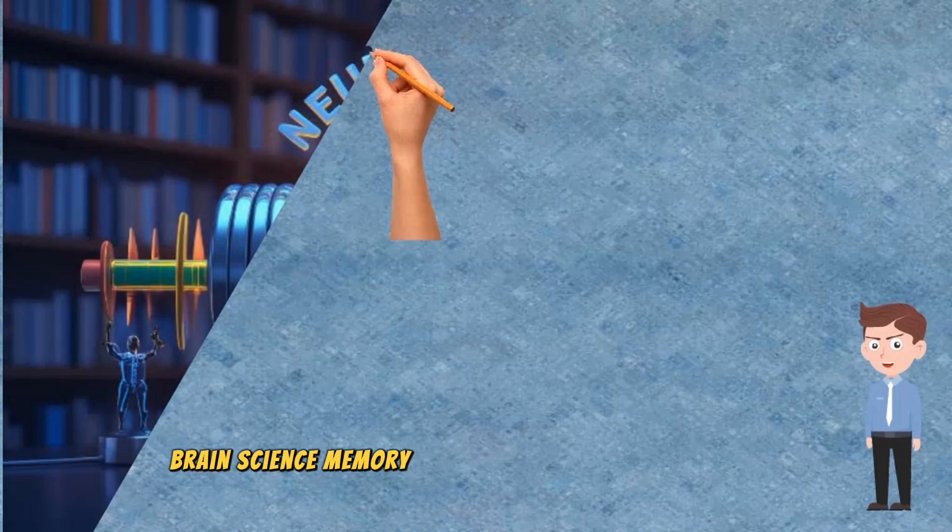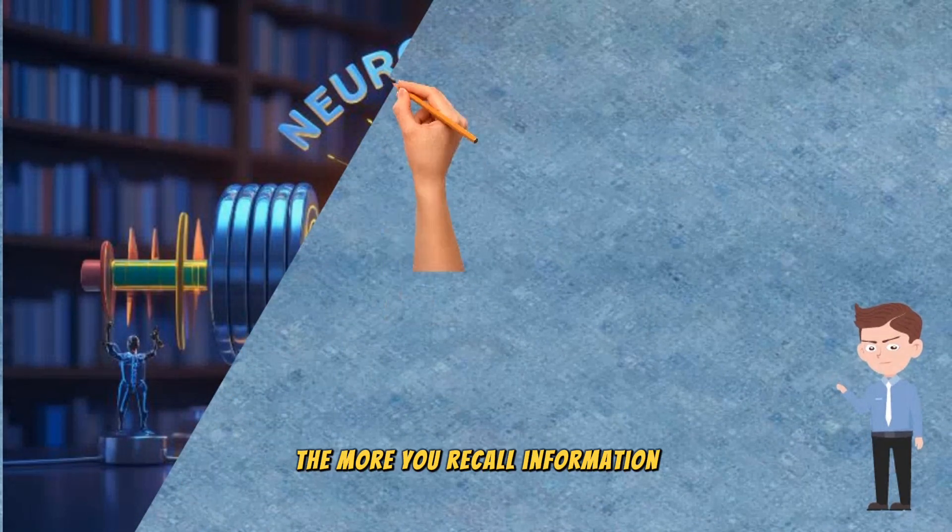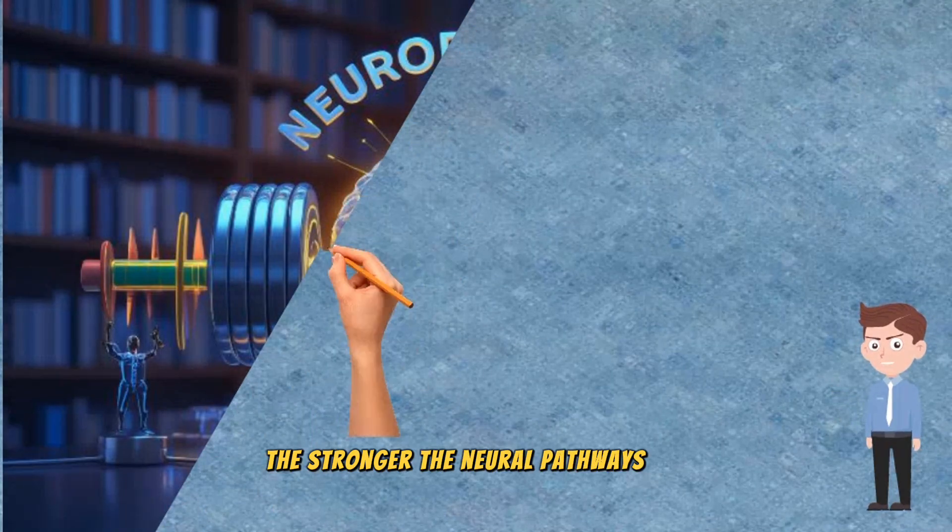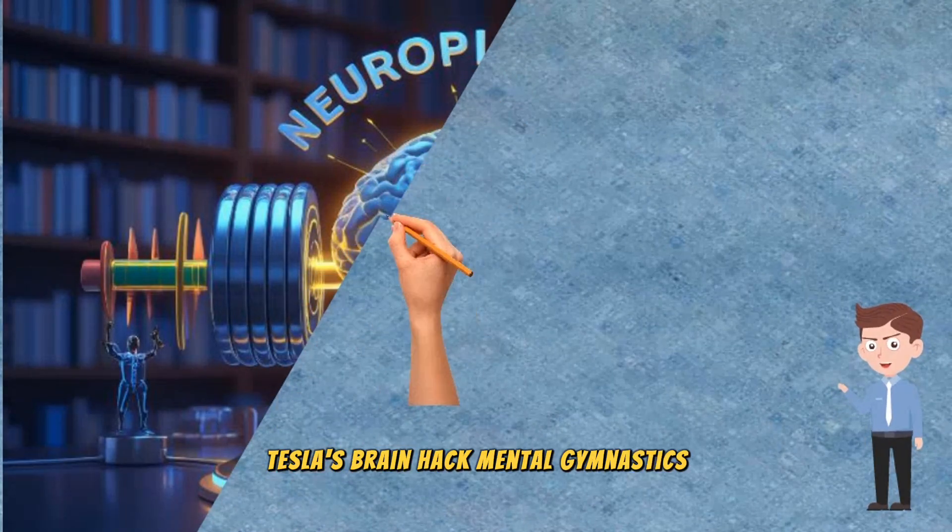Brain science. Memory works through neuroplasticity. The more you recall information, the stronger the neural pathways get. Tesla's brain hack. Mental gymnastics.